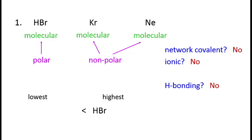But what about the other two? Remember that for two similar materials that only have dispersion, we use molar mass as the tiebreaker. So Neon, which is lighter, will have the lowest melting point, while Krypton will be intermediate.